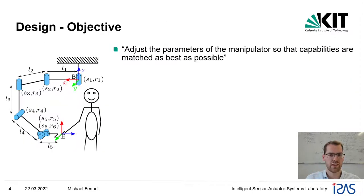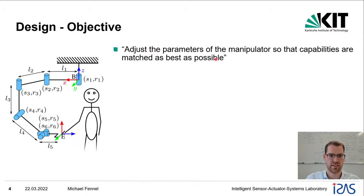We then formulated an objective function. The goal of this function is to adjust the parameters of the manipulator so that the capabilities are matched as best as possible.